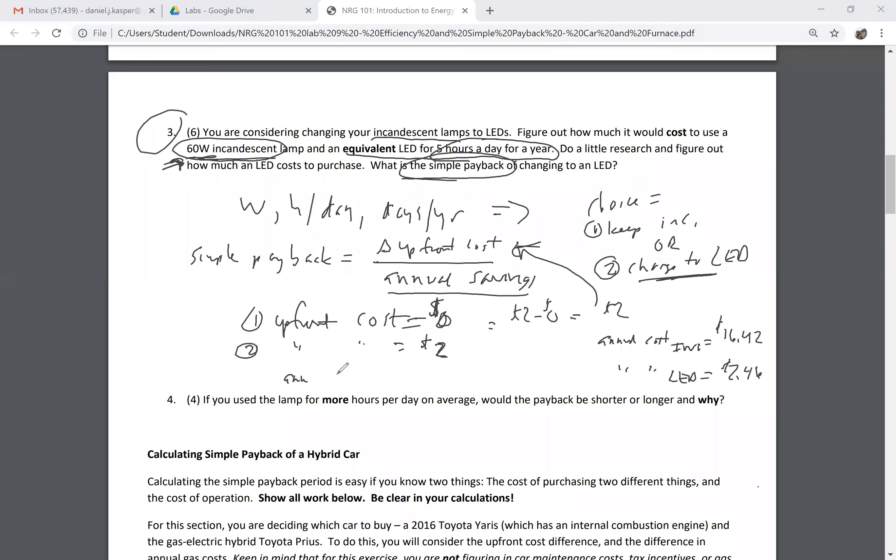My annual savings is just going to be $16.42 minus $2.46. I'm just going to ballpark this because I don't have my calculator handy, so it's about $14. So my annual savings is about $14, and you can figure out the real numbers.